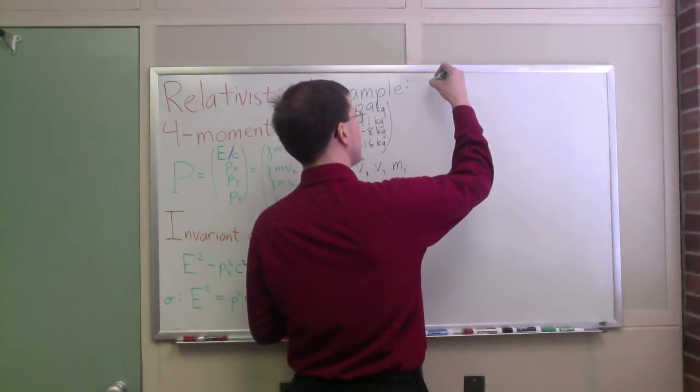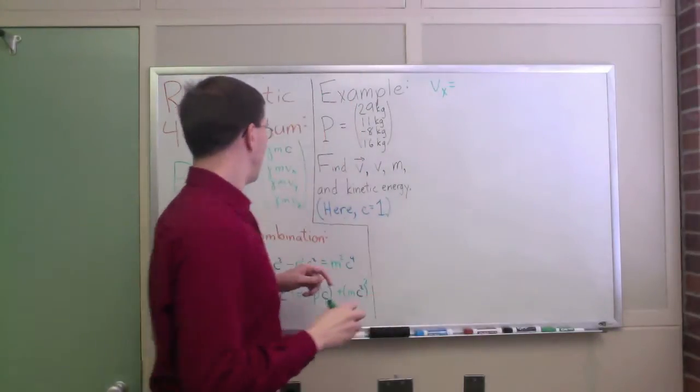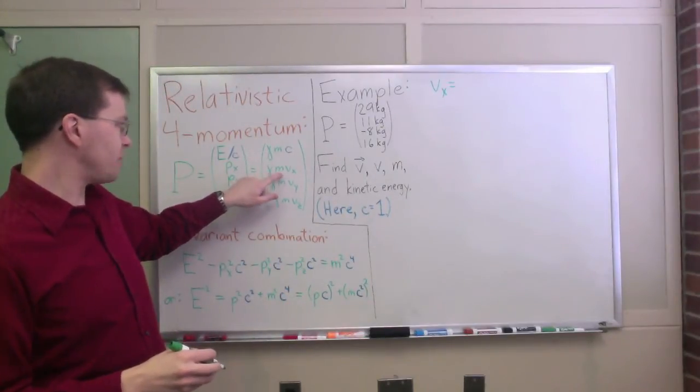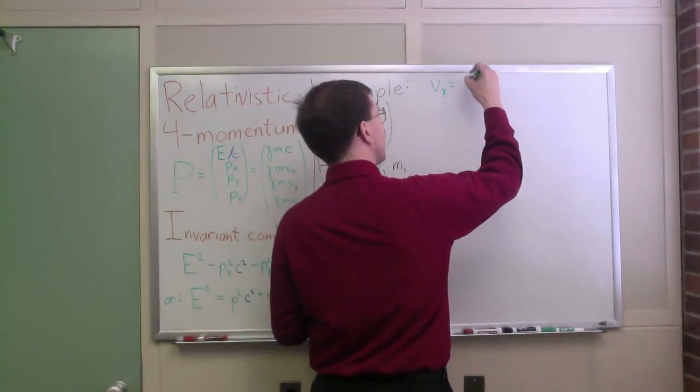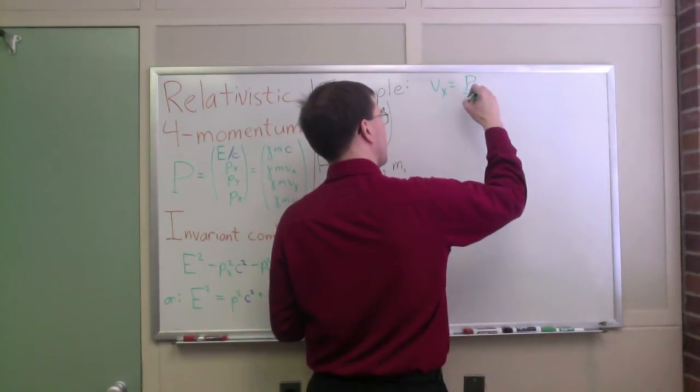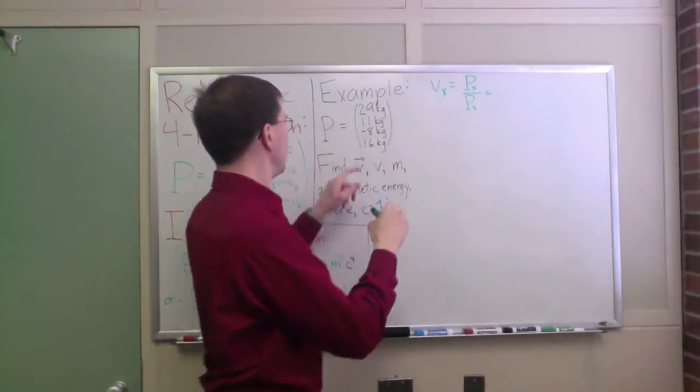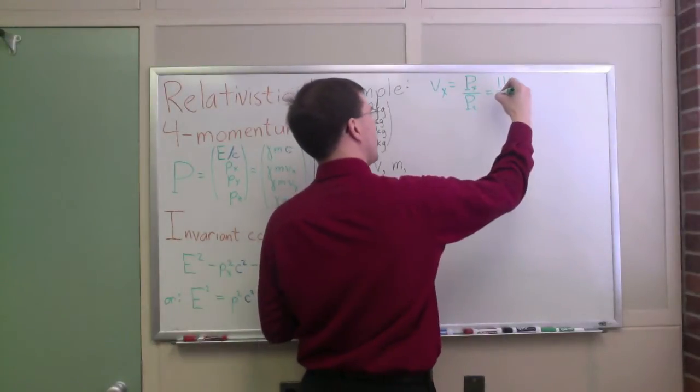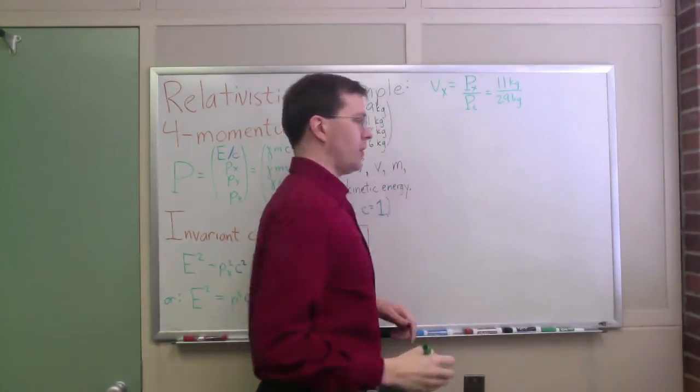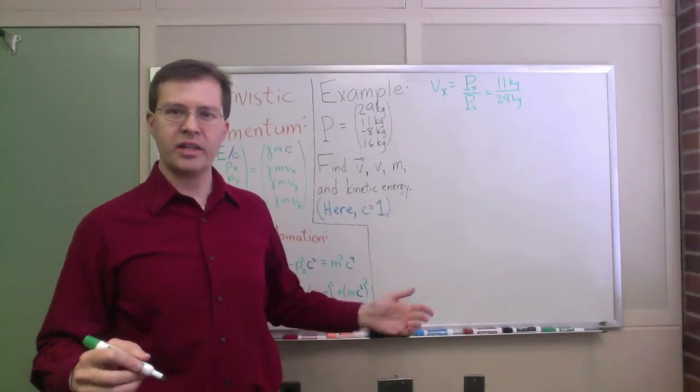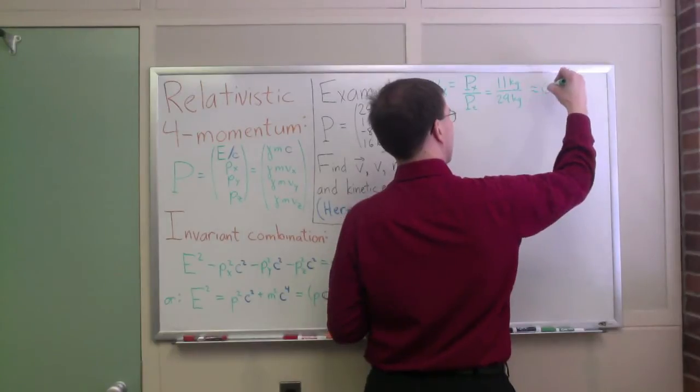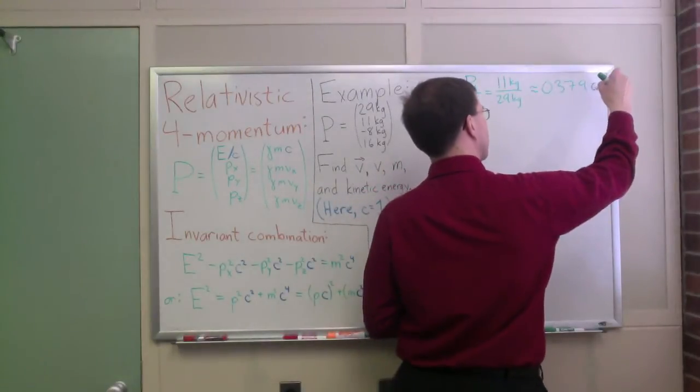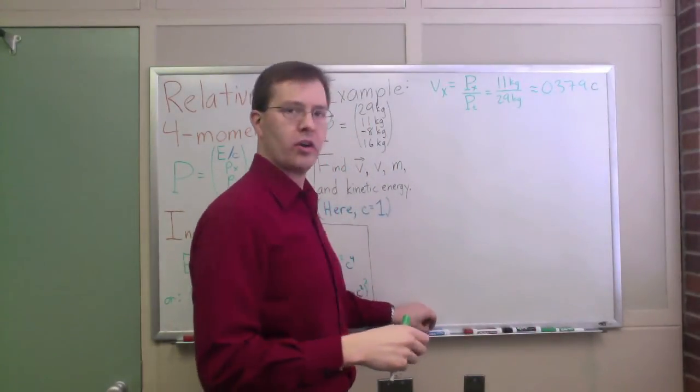Vx equals, okay, I want to do, as I said, I want to take the ratio. I want to take the x component divided by the t component. So, that is px over pt. Plugging those in, my x component was 11 kilograms divided by 29 kilograms. Okay, 11 over 29. I can plug that into a calculator. I already did that. I get about 0.379. And again, ostensibly, that's 0.379 times the speed of light, but our speed of light is one in our units.